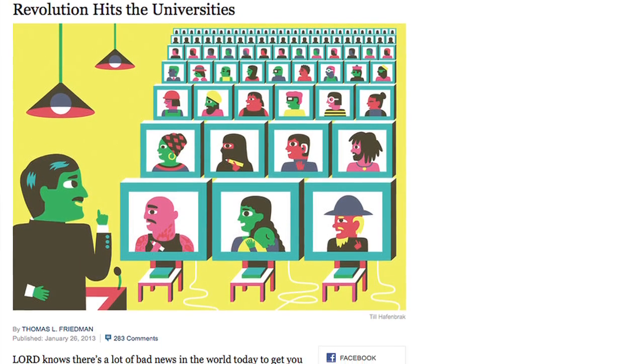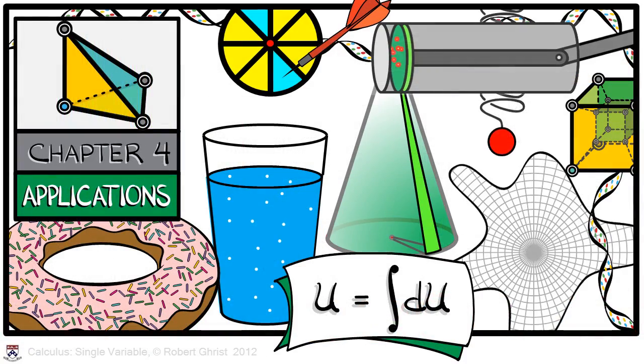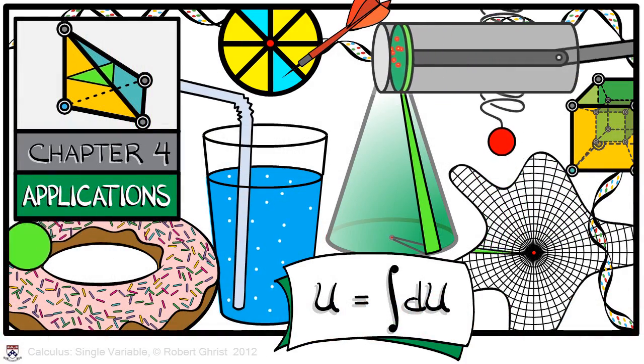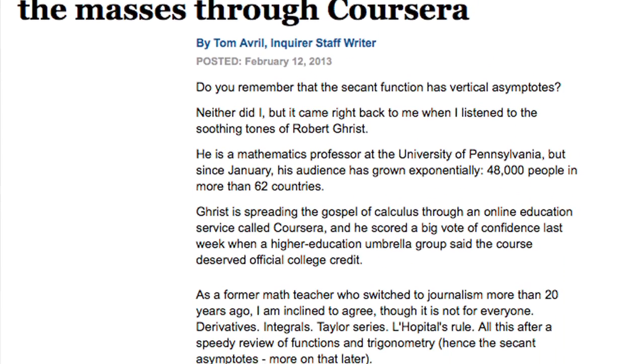Massive open online courses, also known as MOOCs, are revolutionizing education by opening access to millions of people around the world. Professor Robert Greist is one of the first Penn professors to teach a course on Coursera, Penn's partner in online learning.